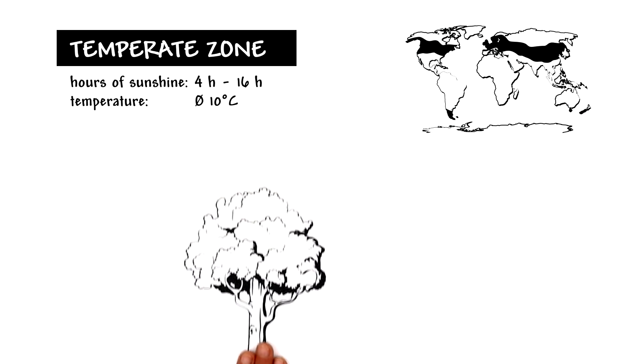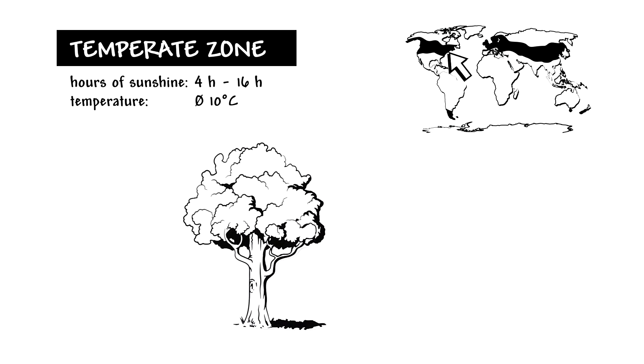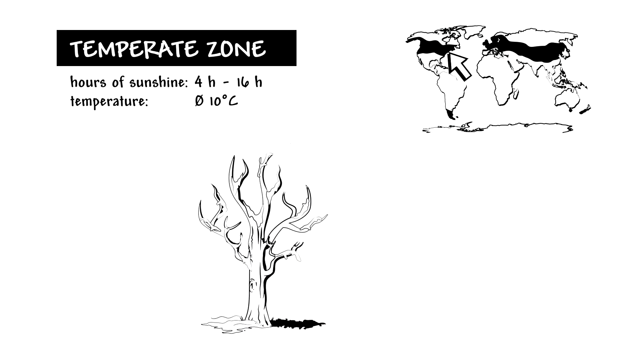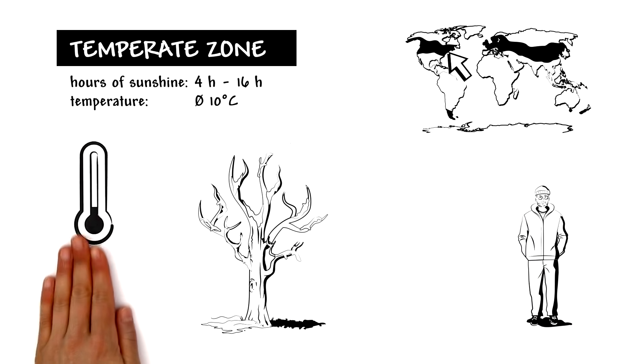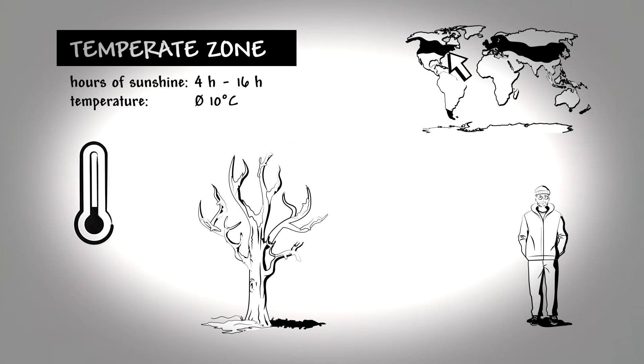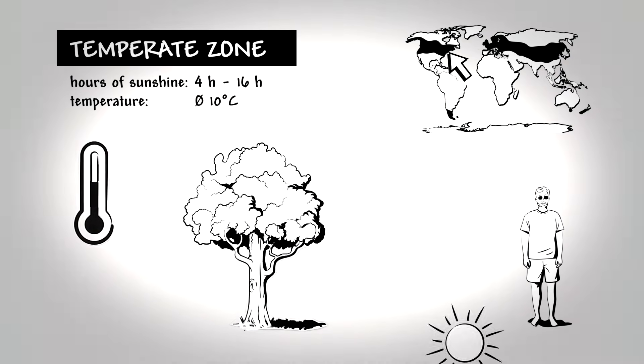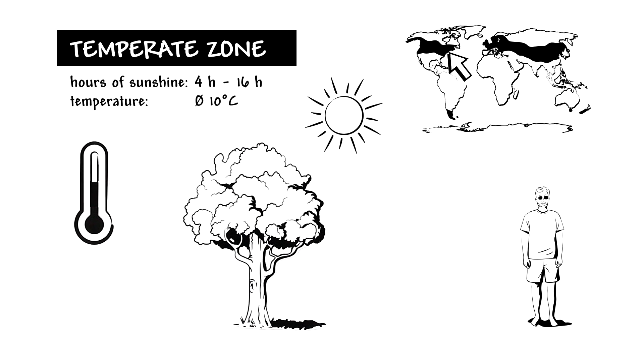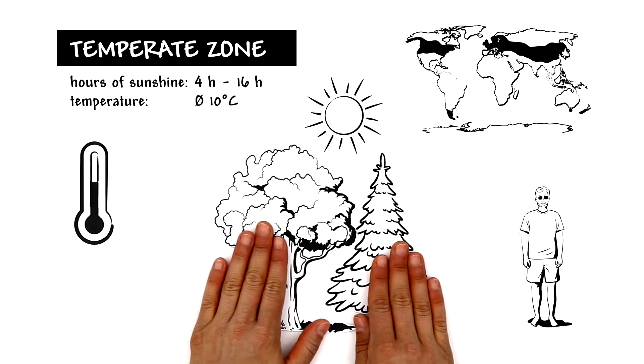The temperate zone, which includes New York, is defined by the familiar seasons. Winters can be icy cold, with a maximum of 4 daylight hours in some areas. On the other hand, summers are pleasantly warm, with up to 16 hours of sunshine. This zone is primarily home to deciduous, coniferous, and mixed forests.